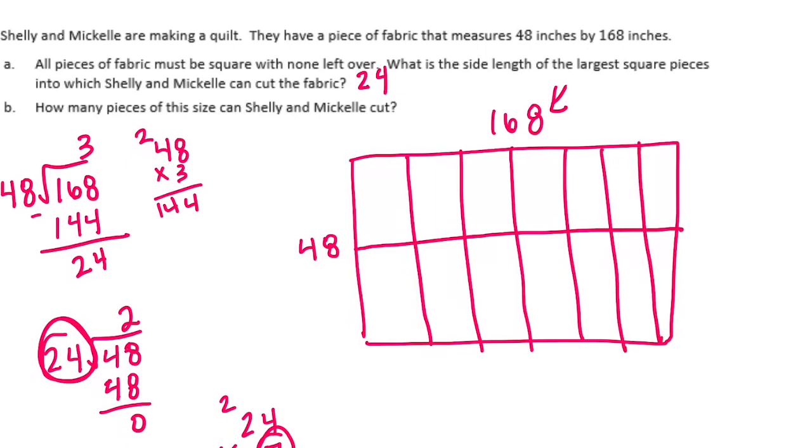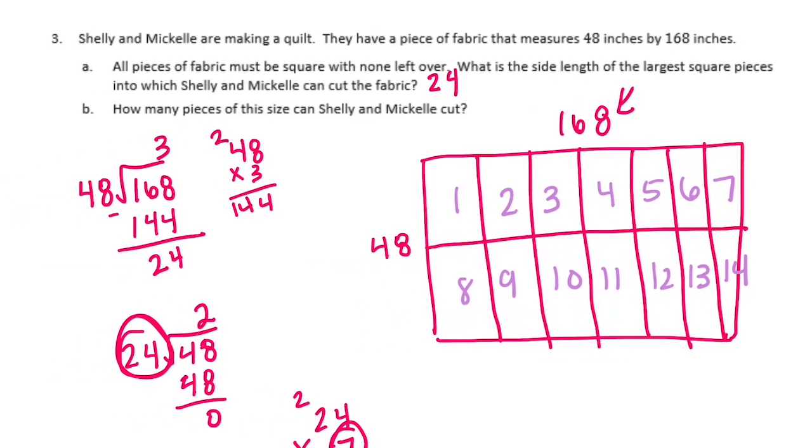And now it wants to know how many pieces of this size can Shelly and Mikkel cut. Well, we have 1, 2, 3, 4, 5, 6, 7, 8, 9, 10, 11, 12, 13, 14. And now we are not just done with lesson 19. But we're done with the whole second module.